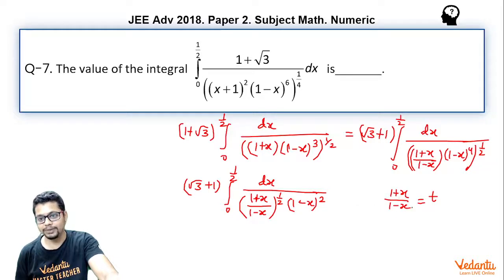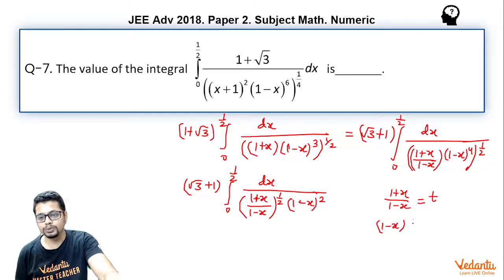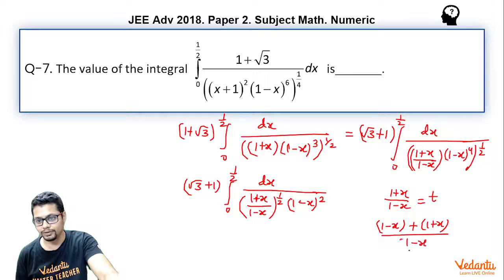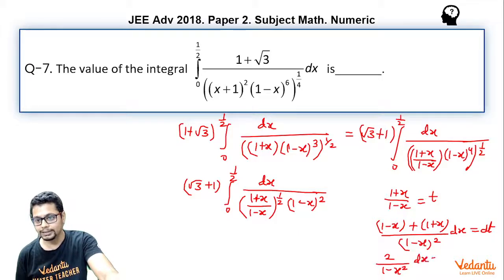Now, take the substitution t = (1 + x)/(1 − x). The reason being, dx divided by (1 − x)² would turn out to be in terms of dt. If you differentiate (1 + x)/(1 − x) using the quotient rule, careful application of the quotient rule gives you that 2/(1 − x)² dx equals dt.